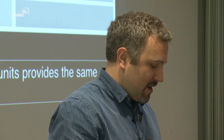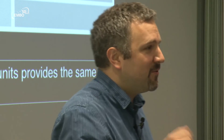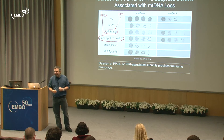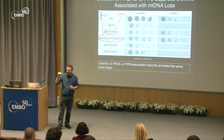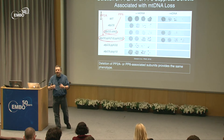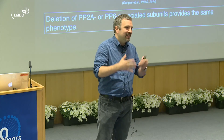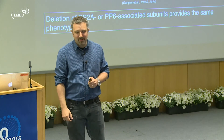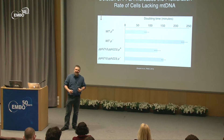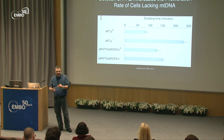Moving downstream to the phosphatases, I deleted the different phosphatases controlled by Tap42. In mammalian cells, Sit4 corresponds to protein phosphatase 6, and there are two paralogous catalytic subunits for protein phosphatase 2A. Deleting protein phosphatase 6 or protein phosphatase 2A suppresses the death of the sensitized mutant after mitochondrial DNA loss. Deleting both together is lethal, indicating parallel activity.